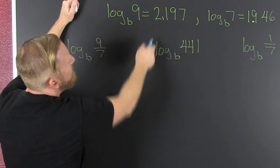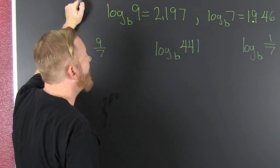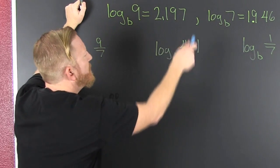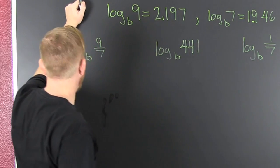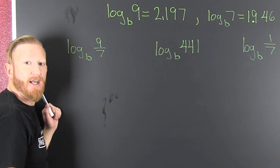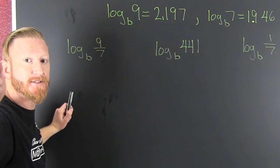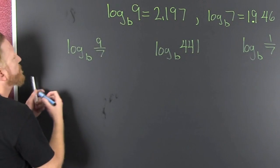If I have log base b of 9, and that's 2.197, and log base b of 7 is 1.946, then we want to evaluate these logs. Let's go!